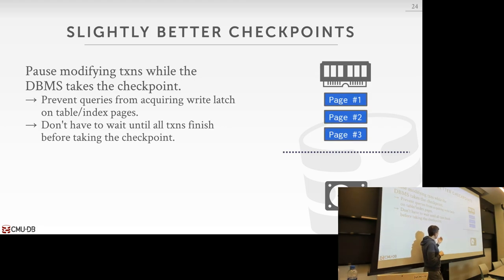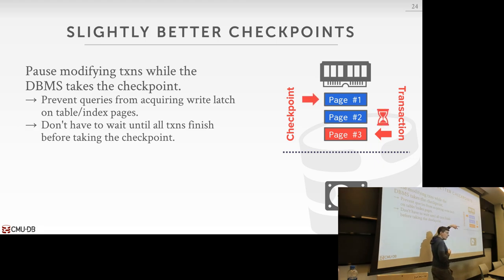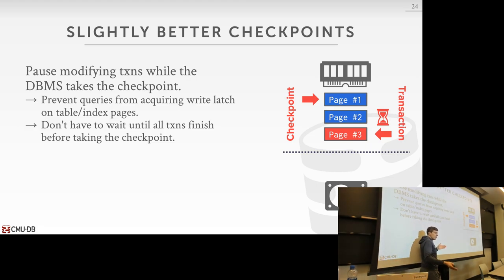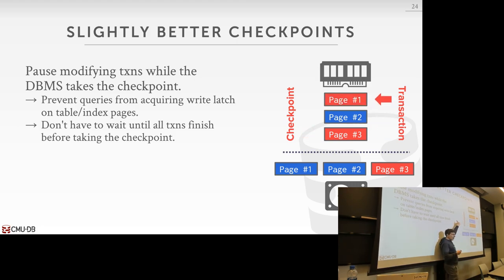Say I have three pages in memory, a transaction, and a checkpoint that occur at the same time. Say this transaction is going to update page three and page one. It starts at the bottom, applies its change to page three, and then before it can update page one, the checkpoint starts — so we stall our transaction because it's going to try to acquire the write latch on page one. The checkpoint does a sequential scan of every single page in the buffer pool and flushes them out. Our checkpoint writes out page one, two, three with the modification to page three. Then the checkpoint finishes, our transaction gets unstalled and updates page one. Now for one query this transaction executed, we saw half their changes — our checkpoint on disk is not consistent.